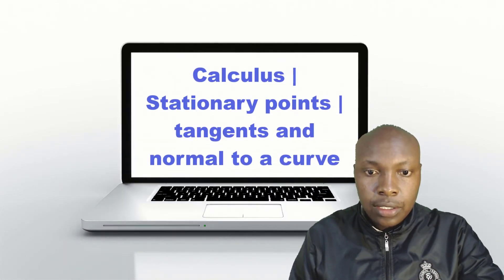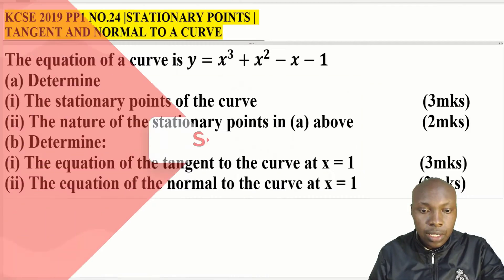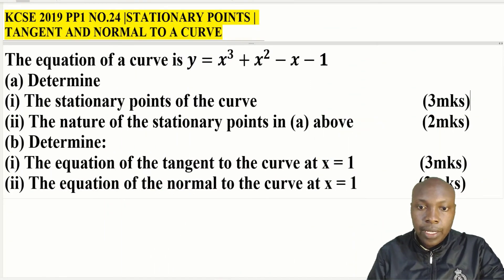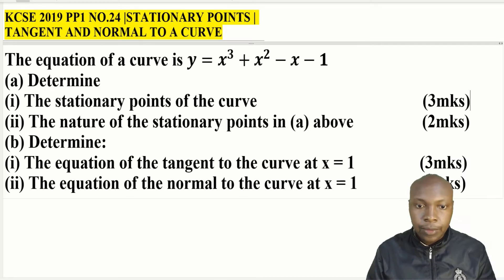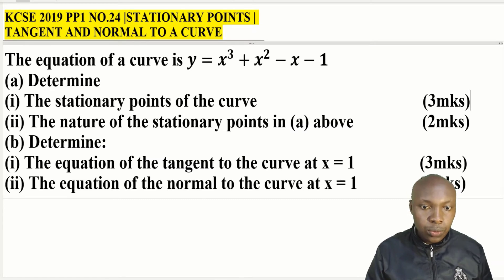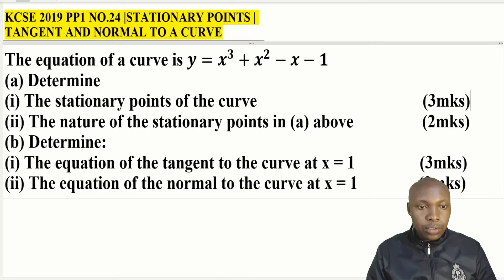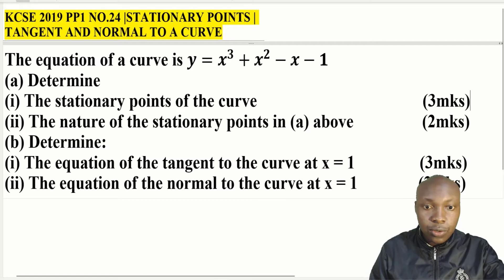Hello everyone and welcome to the lesson. This is Calculus ECC 2019 Paper 1, Question 24. It's about a stationary point, tangent, and normal to a curve. The equation of the curve is y = x³ + x² - x - 1. We need to determine: part 1, the stationary points; part 2, the nature of those stationary points; then part b1, the equation of the tangent at x = 1; and part b2, the equation of the normal at x = 1.